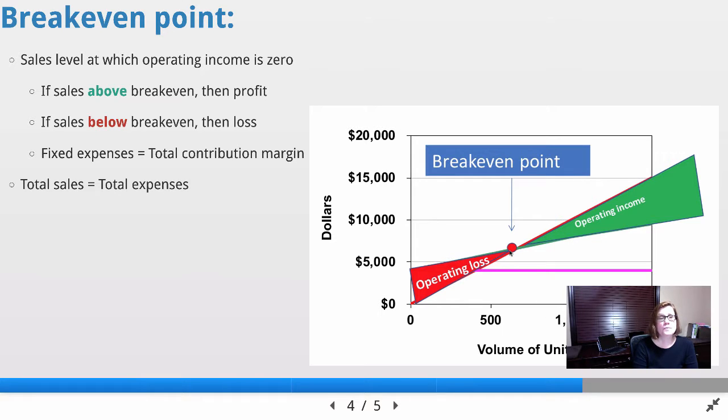Here's the depiction of the break-even point. Note that at the break-even point, your sales level and your income is zero. At this particular sales level, your income will be zero, so you're not making money. At this break-even point, you're at zero bottom line, which means that your fixed expenses equals your total contribution margin. Your total sales equals your total expenses.